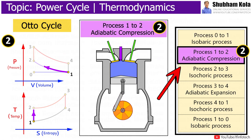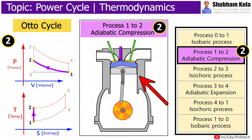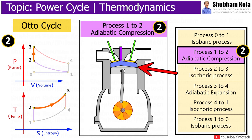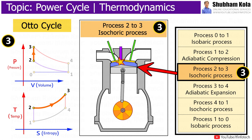Process 1 to 2 is an adiabatic compression process, where the piston moves up to compress the air-fuel mixture. The compression causes the mixture to increase in pressure and temperature. However, there is no heat exchange, and the cycle reaches point 2, which is when the fuel is met by the spark plug to be ignited.